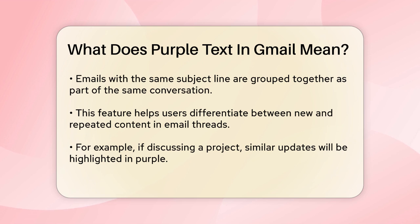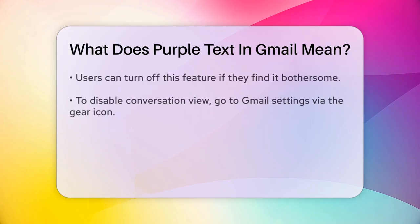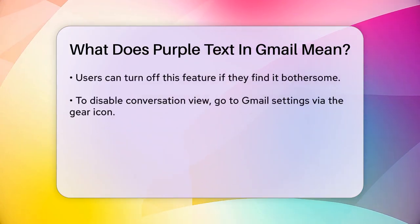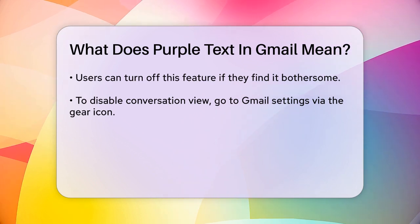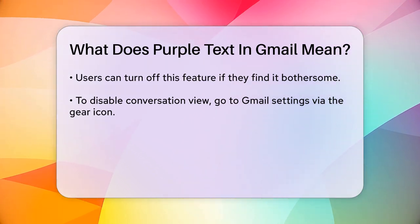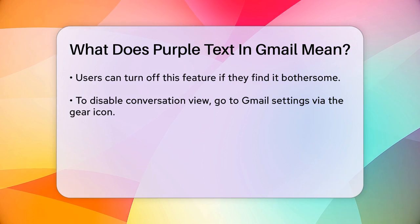This is meant to help you see which parts of the email are new and which are repeated from previous messages in the thread. To see this in action, imagine you're discussing a project with a team and several team members send emails with similar updates. Gmail will color the repeated text in purple so you can quickly identify what's new and what you've already read.